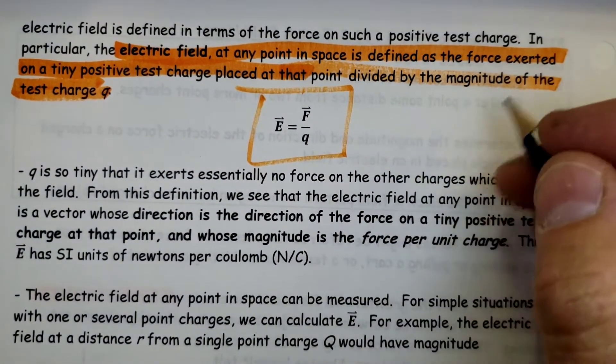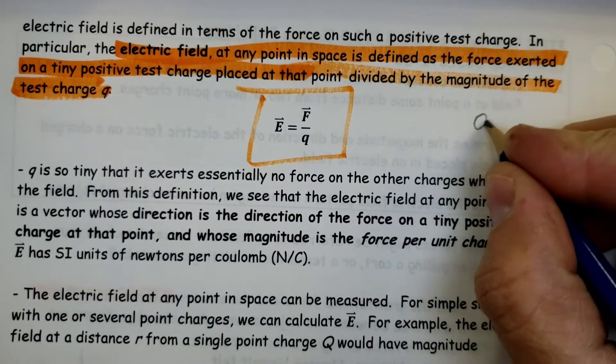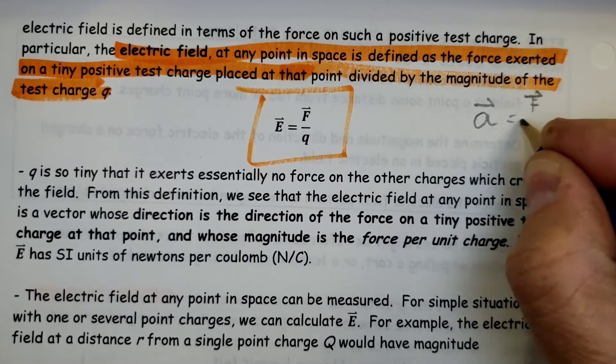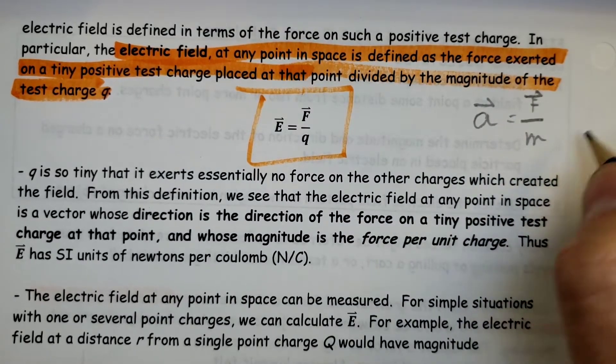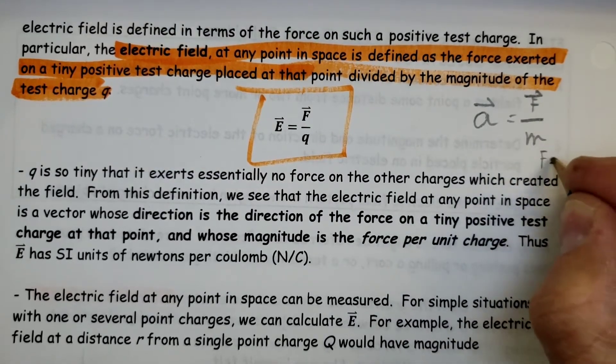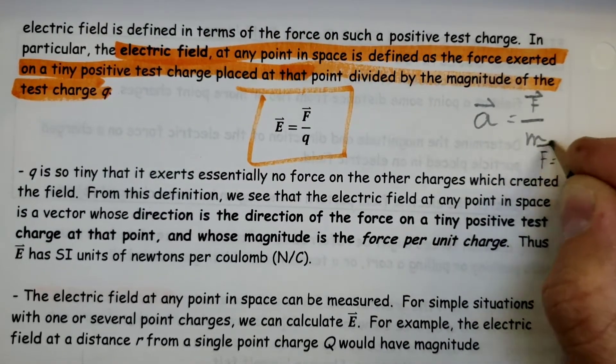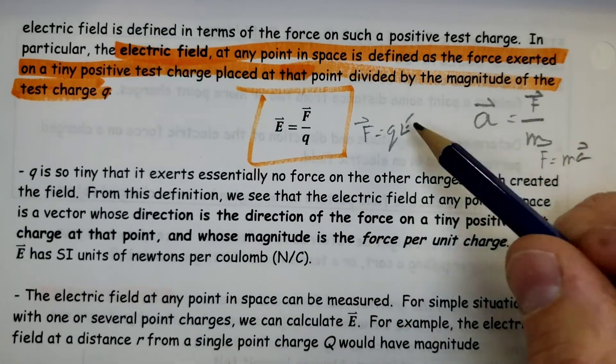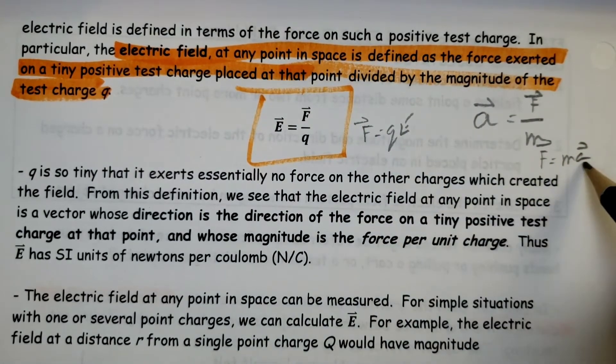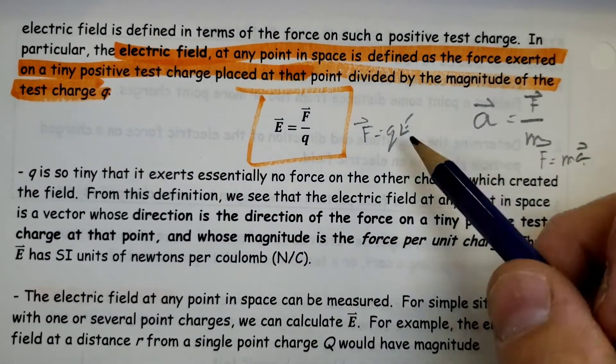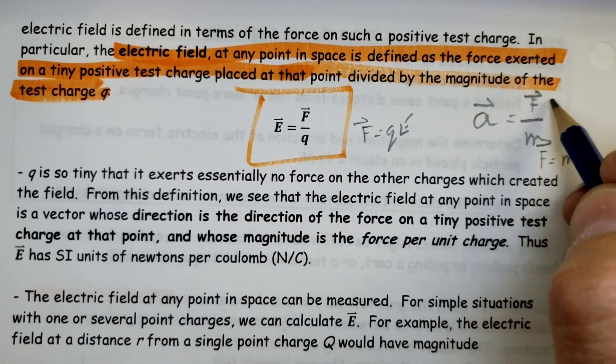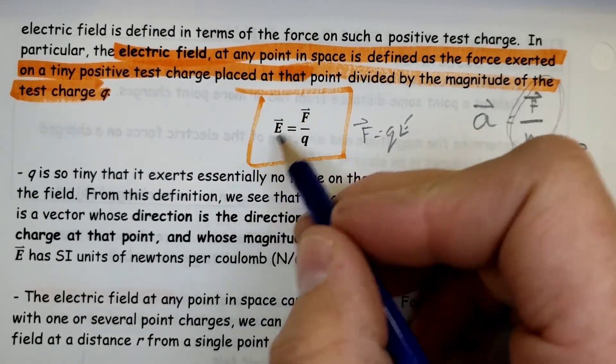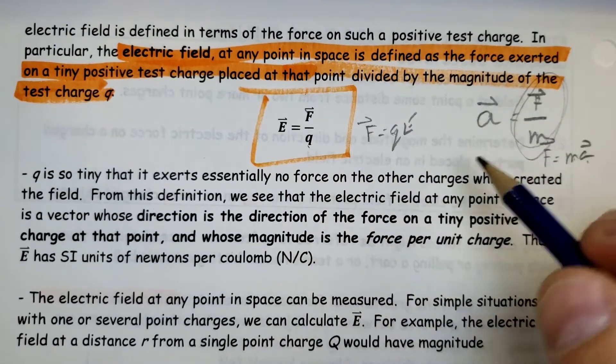This is very similar to gravity. With gravity, we have a field too, and it's a force per unit of mass. We call that acceleration. So F equals MA. Here we have F equals QE. So the A is like acceleration, and the mass and charge are very similar as well. Gravitational field, or acceleration due to gravity, force per mass. Electric field strength, force per charge.